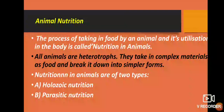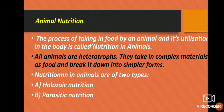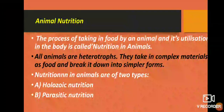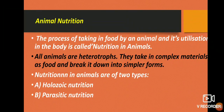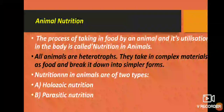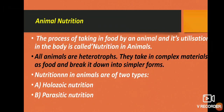In chapter 1, you have learnt what is nutrition. The process of taking food by an organism as well as the utilization of the food by the organism is called nutrition. Then what is animal nutrition? The process of taking in food by an animal and its utilization in the body is called nutrition in animals — just in the place of organism, you write animal.